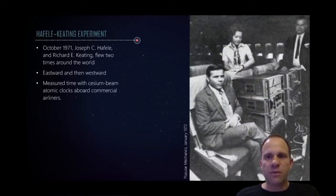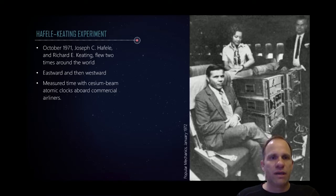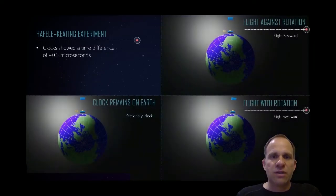And this was indeed experimentally validated in October 1971 by Joseph Hafele and Richard Keating. They flew two times around the world, one time westward and one time eastward. And they bought three business class tickets. Two business class tickets for themselves and one business class ticket for Mr. Clock. And Mr. Clock was a cesium beam atomic clock. And they located this atomic clock just on the business class seat of a commercial airliner.